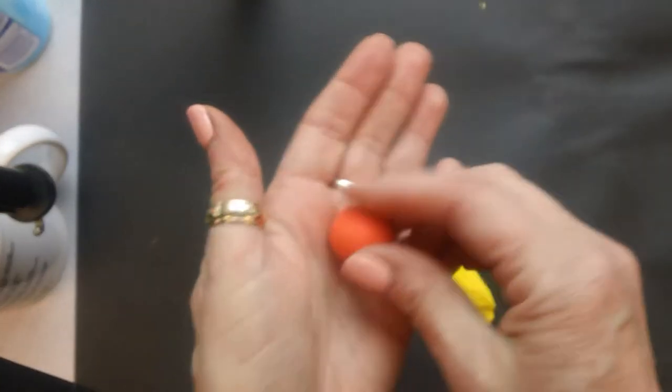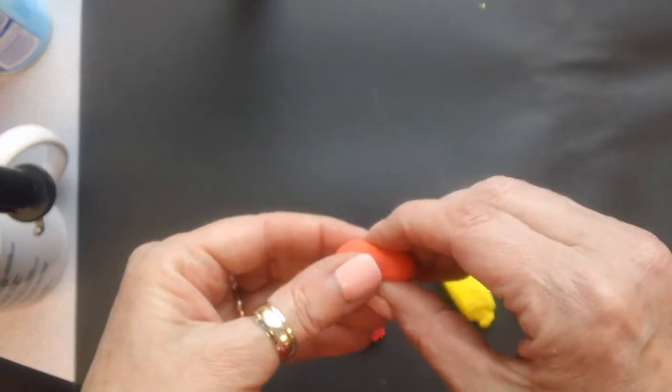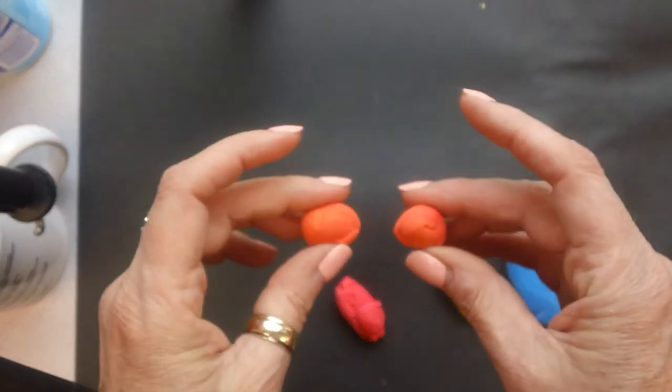Now I'm going to roll it into a ball. And now I have to divide this into two pieces. And they're pretty equal.